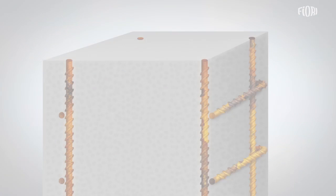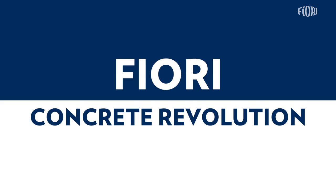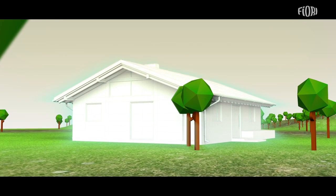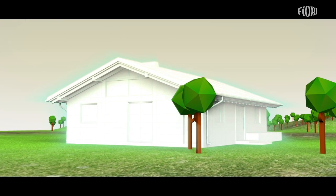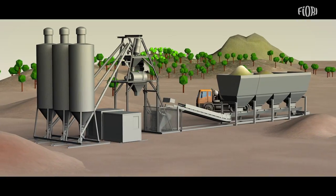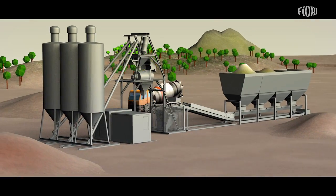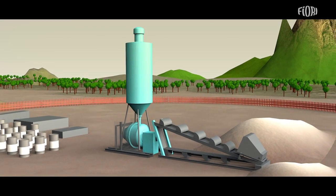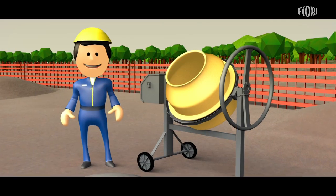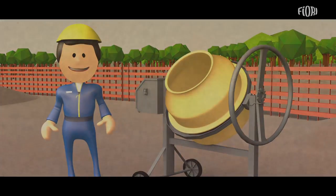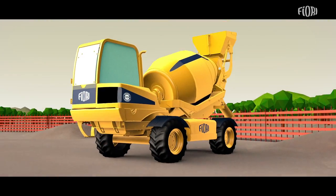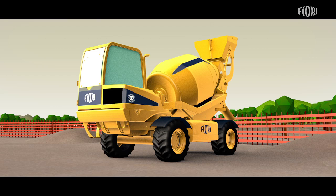So what is the best way to batch concrete? There are various possibilities. Let's compare them in the construction of a building. You can make use of a concrete batching plant, an on-site plant, a manual concrete mixer, or batch your concrete using the Fiori solution. Here are some of the advantages of this method.